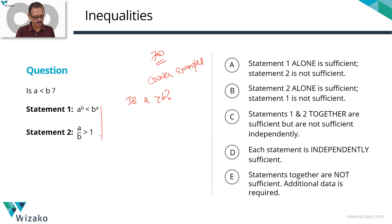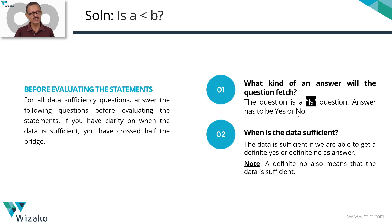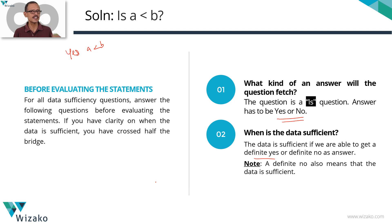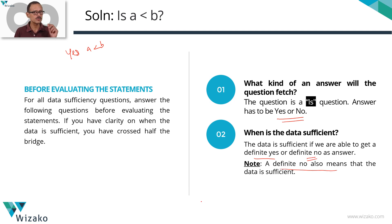Before we venture into the statements, let's get a handle on what kind of question this is. At the outset, it's a 'be-verb' question — an 'is' question. The answer to any 'is' question is a yes or a no. The data is sufficient if you get a definite yes. A definite yes here means a is less than b — you can say without an iota of doubt that a is less than b. The data is also sufficient if you get a definite no.